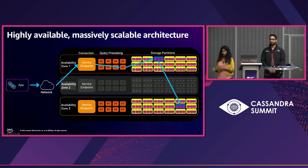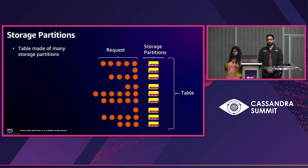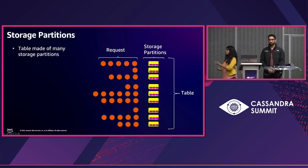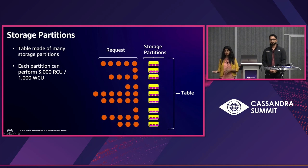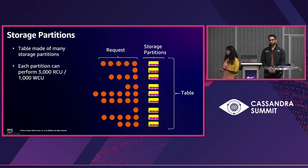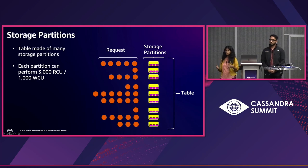Now let's understand how the table data itself is organized. At a high level, a table is made of multiple storage partitions divided based on key spaces — specific parts of the table are stored in certain storage partitions. We cap each partition at 3,000 RCUs or 1,000 WCUs. One RCU can provide up to 4 KB of data, so selecting 8 KB of data consumes two RCUs. With local one consistency, we consume half, as requests are distributed more equally across partitions. One WCU can write up to 1 KB.